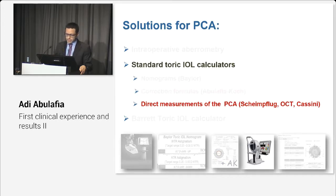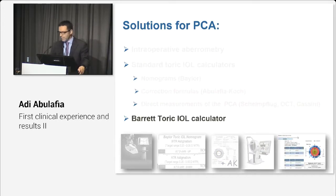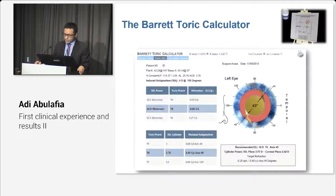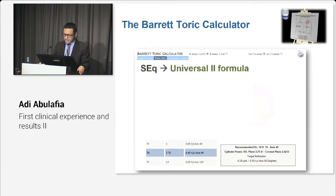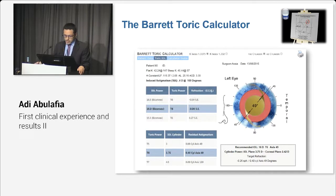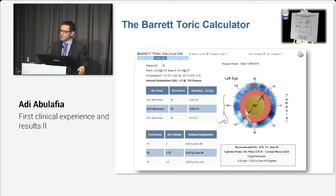A third option is to use the Barrett Toric calculator. The full version is available online as well as on the LENSTAR device — it's an all-in-one solution. It is based on the Universal II formula and has an integral solution which takes into account both the effective lens position and a mathematical model that calculates the estimated net corneal astigmatism utilizing anterior corneal-based measurements.